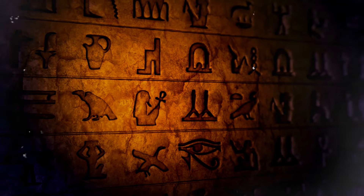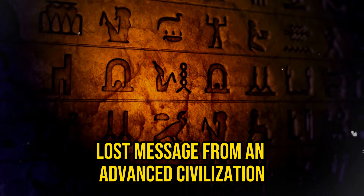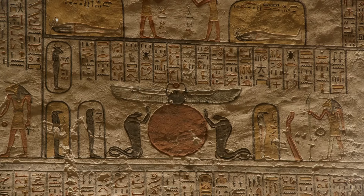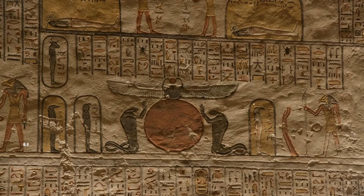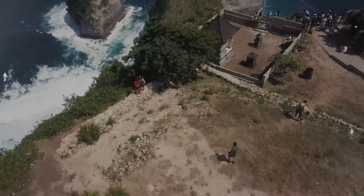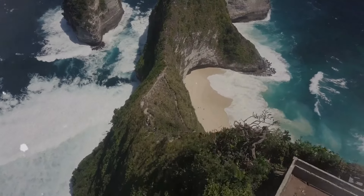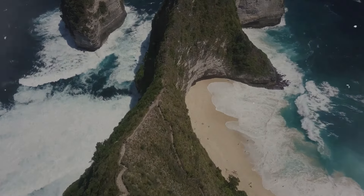Could these symbols be a coded language or a lost message from an advanced civilization? The possibility that ancient Egyptians might have had encounters with otherworldly beings and their technologies fuels a fascinating conversation about the true extent of their knowledge and connections. This perspective invites us to reconsider the origins and capabilities of one of the world's most enigmatic civilizations.